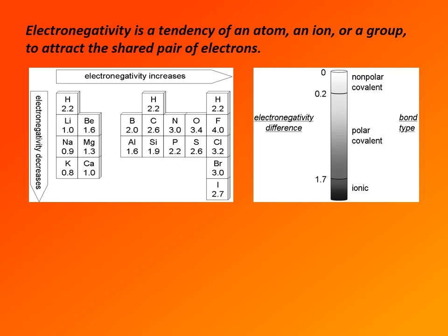Whether bond will be covalent or ionic, and if it's covalent, whether it will be polar or nonpolar, depends on difference in electronegativity between the atoms that form that bond. So if the difference is between 0 and 0.2, including 0.2, that bond is nonpolar covalent, which means that the electron pair is evenly shared by the two atoms.